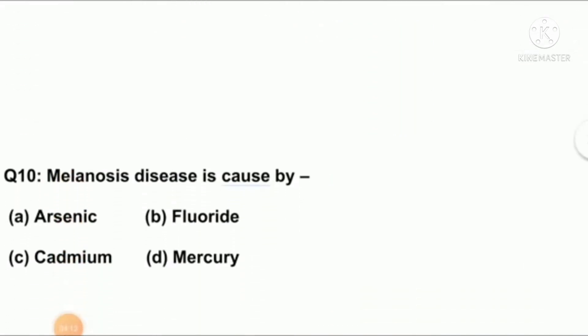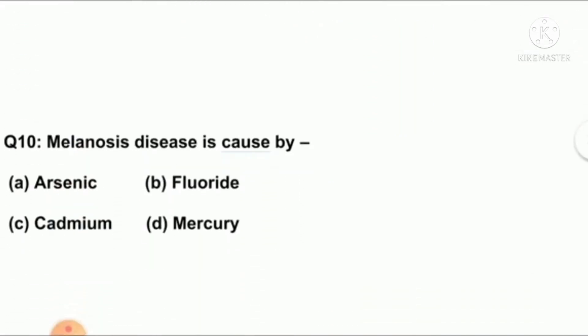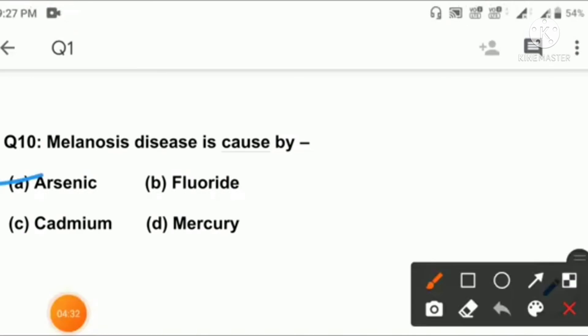Question number ten: melanosis disease is caused by A: Arsenic, B: Fluoride, C: Cadmium, D: Mercury. Right answer is option A: Arsenic.